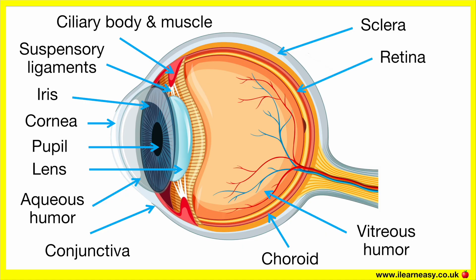Retina. The retina is a layer of tissue at the back of the eye that captures light and turns it into electrical signals. This layer contains photoreceptors — rods and cones. Rods detect black and white, are found in the periphery, and are sensitive to motion and night vision. Cones detect colour, are concentrated in the fovea, and are responsible for sharp central colour vision.